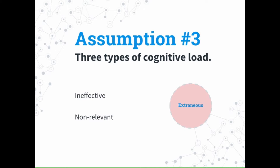The second type is extraneous cognitive load — the non-relevant, ineffective stuff that does not contribute to learning. It could be environmental, or the design itself causing extra load. The third type is germane load, which is the good stuff — the effective content that helps us build schema and represents the real details of the learning process.